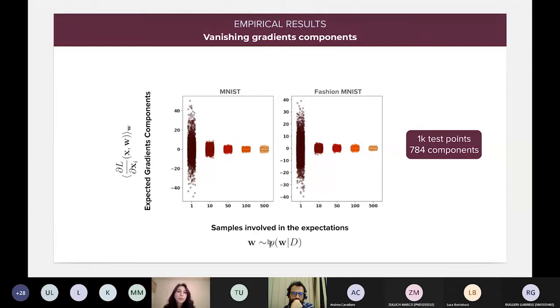Okay, so this third plot is about the vanishing gradients components. So, as we did in the first one, we are computing the expected loss gradients on other two data sets, which are MNIST and fashion MNIST, on 1K test points. And notice here that each one of the images belonging to these data sets have 28 by 28 pixels, so a total of 784 components, which are shown for all the test points on the y-axis. While on the x-axis, we are simply increasing the number of samples from the posterior. And also, in this case, you can see that these components tend towards zero.